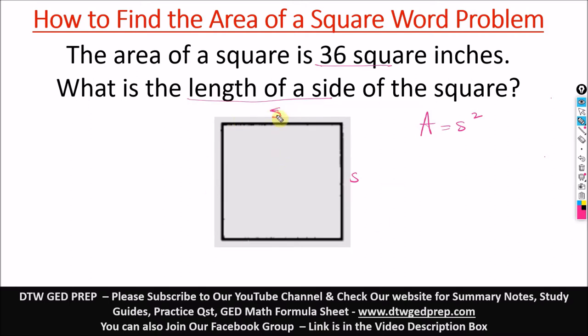In a square all sides are equal, so if this is s, this is s, this is also s and s. So we have to find the length of one side.